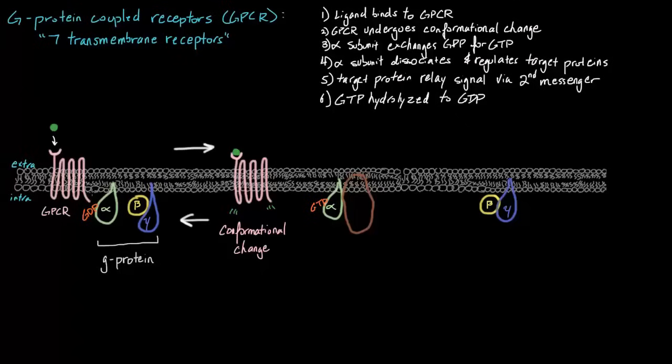This often happens on its own. Eventually, the GTP will be hydrolyzed and become GDP. Though our body actually has a few ways to regulate this. One common way out of a few is the RGS protein, which is regulation of G protein signaling. And this can accelerate this step.